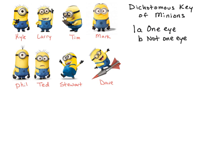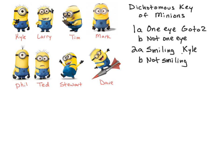So I'm going to focus on the ones with one eye right now. I'm going to write 'go to two,' and then I'm only going to look at the ones that have one eye, which would be Kyle and Phil. Looking at Kyle and Phil, how could I tell them apart? I noticed that one is smiling. So I'll write that down, and then I'll do the opposite: not smiling. Kyle is smiling, so I'm going to write Kyle's name and underline it. So I just keyed out Kyle. And not smiling is Phil — so I just keyed out Phil.